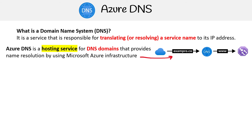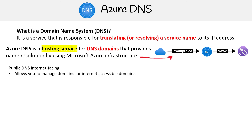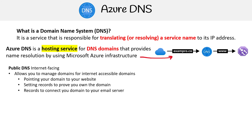There are two types of DNS you can make. You have a public DNS, which is internet-facing and the one you're likely going to be using. This allows you to manage your domain for internet-accessible domains — pointing your domains to your website, creating records to prove you own the domain, or pointing emails to your email server.